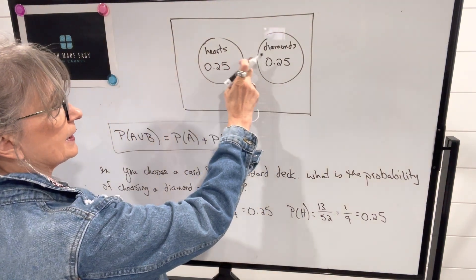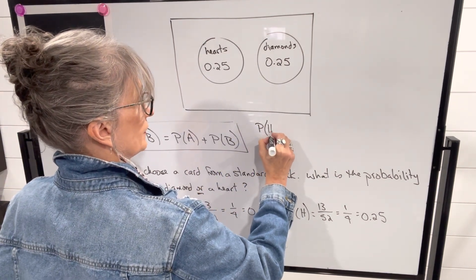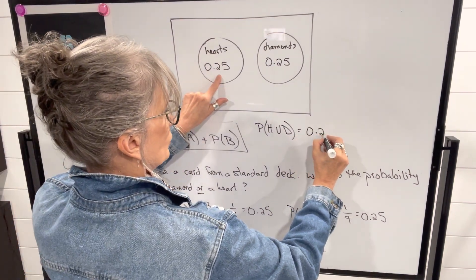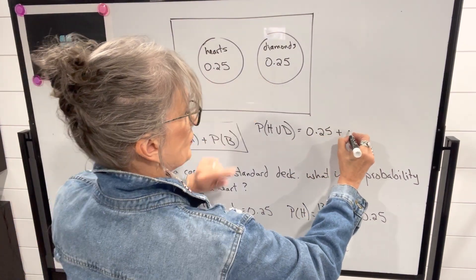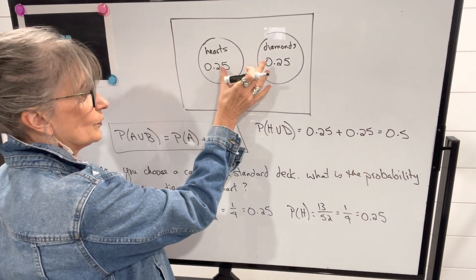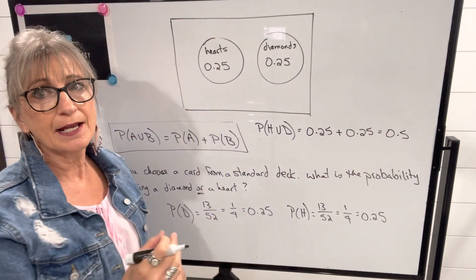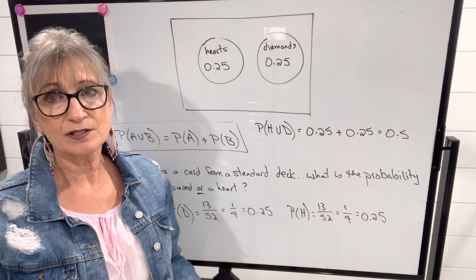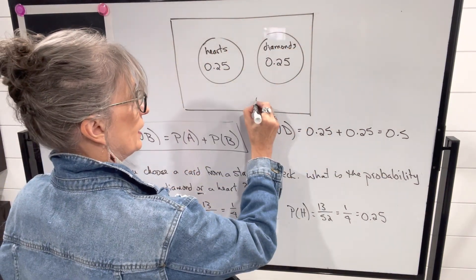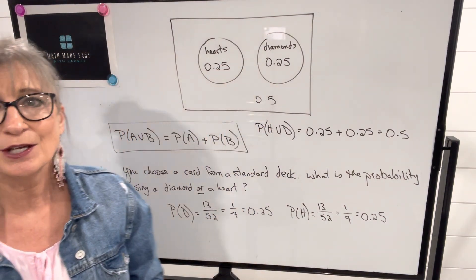These add up to 0.5. So the probability of choosing a heart or a diamond equals the probability of a heart, 0.25, plus the probability of a diamond, 0.25, which is 0.5. The other possible outcomes account for the rest — one minus 0.5 is 0.5. So the probability of choosing something other than a heart or a diamond would be 0.5.